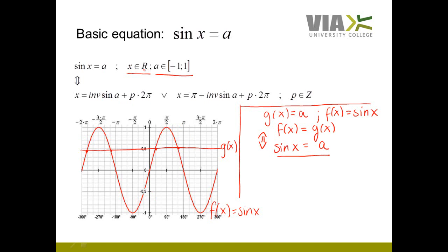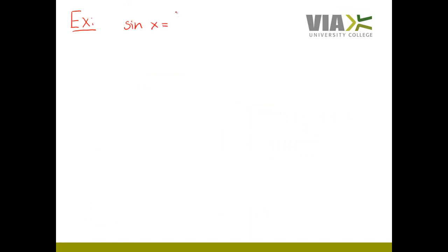So how do we solve this basic equation sin x equals a? Let's look at one example and then generalize afterwards. The example is to solve sin x equals 1 over 2, which is an instance of the basic equation sin x equals a where a equals 1 over 2. This is okay, since a just has to be between minus 1 and 1. There are no restrictions on x; x belongs to the real numbers.